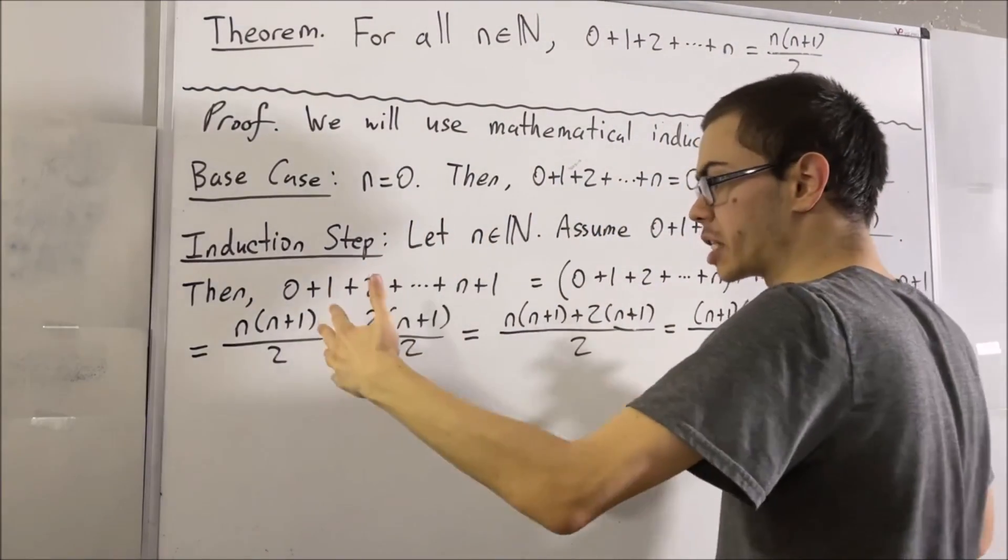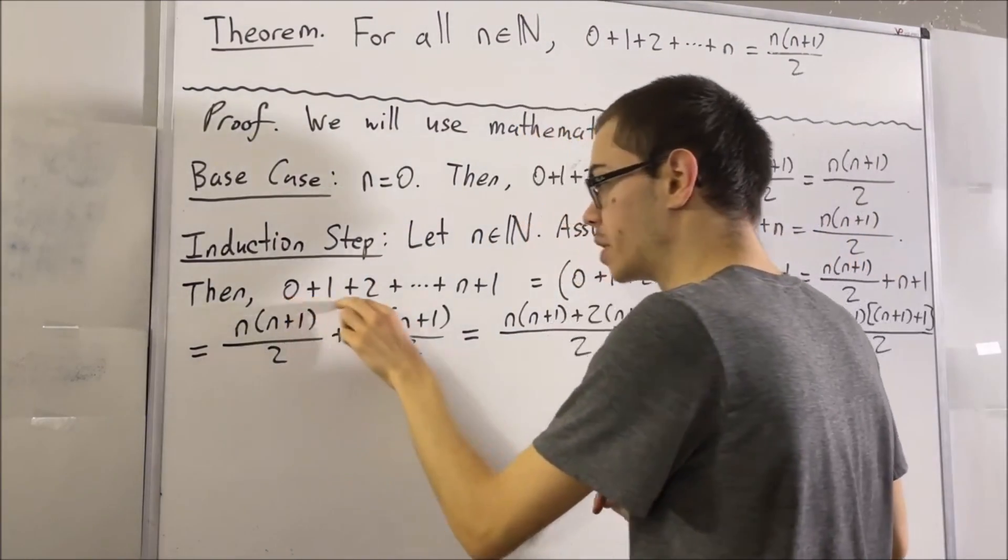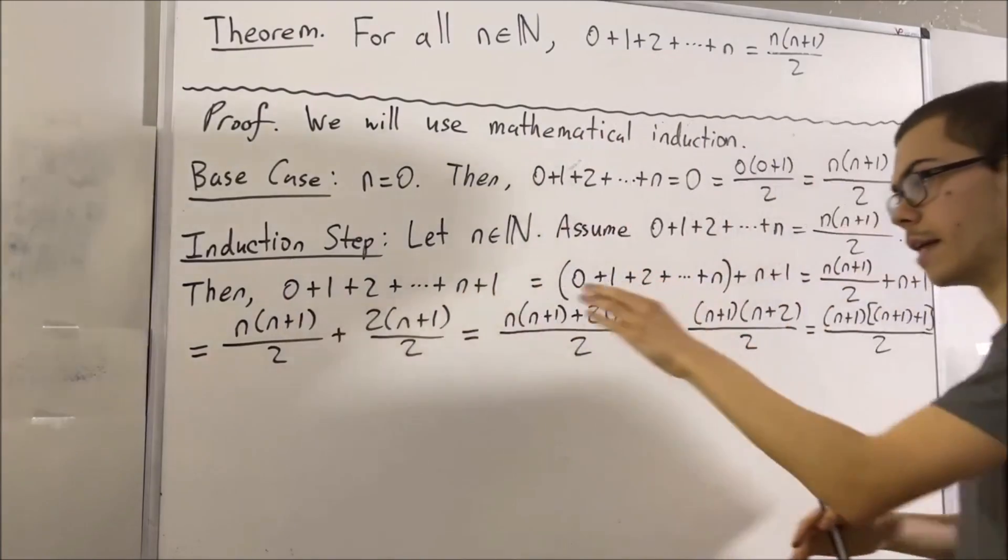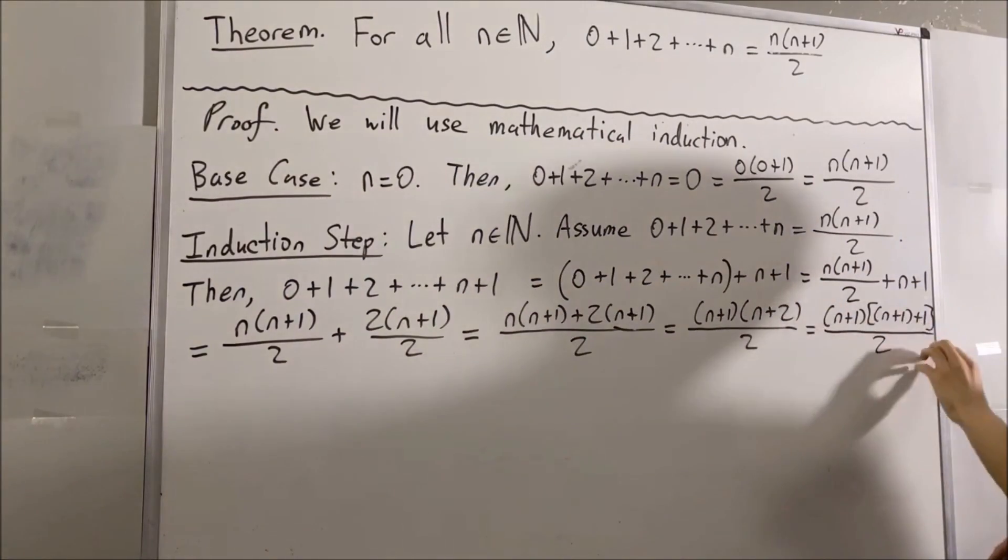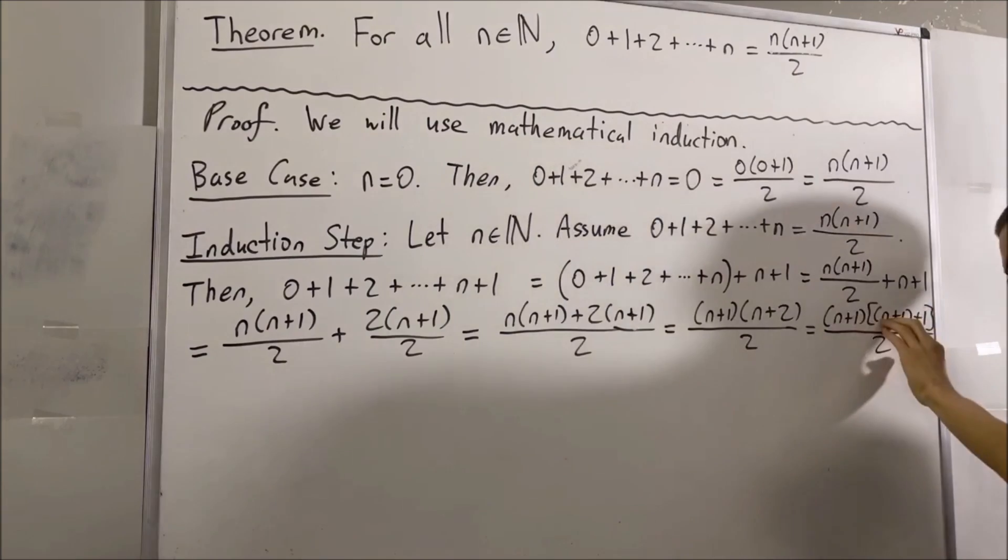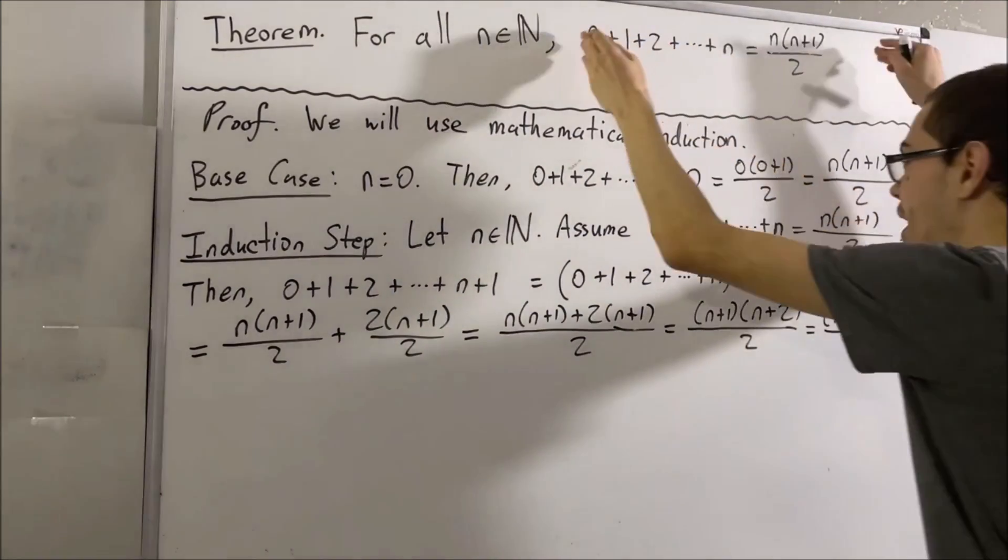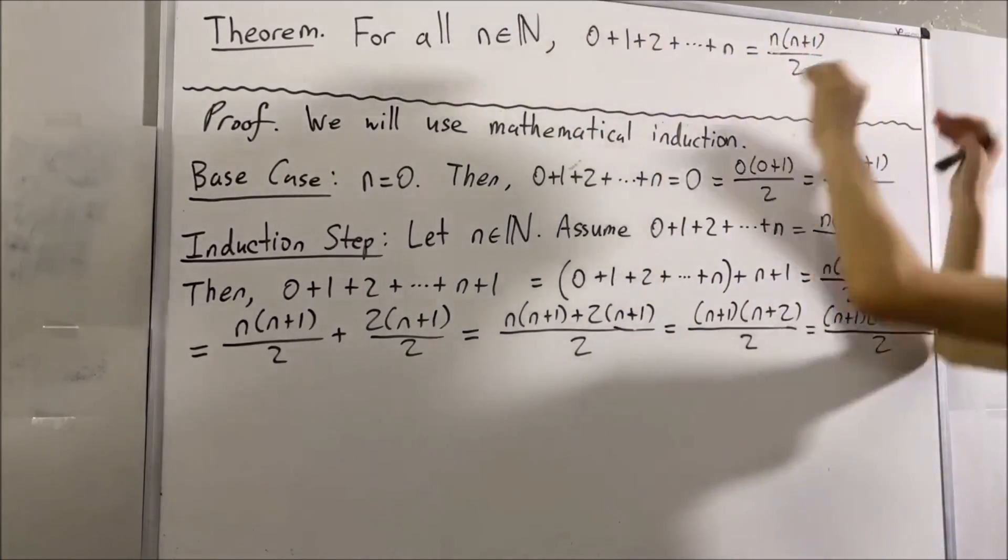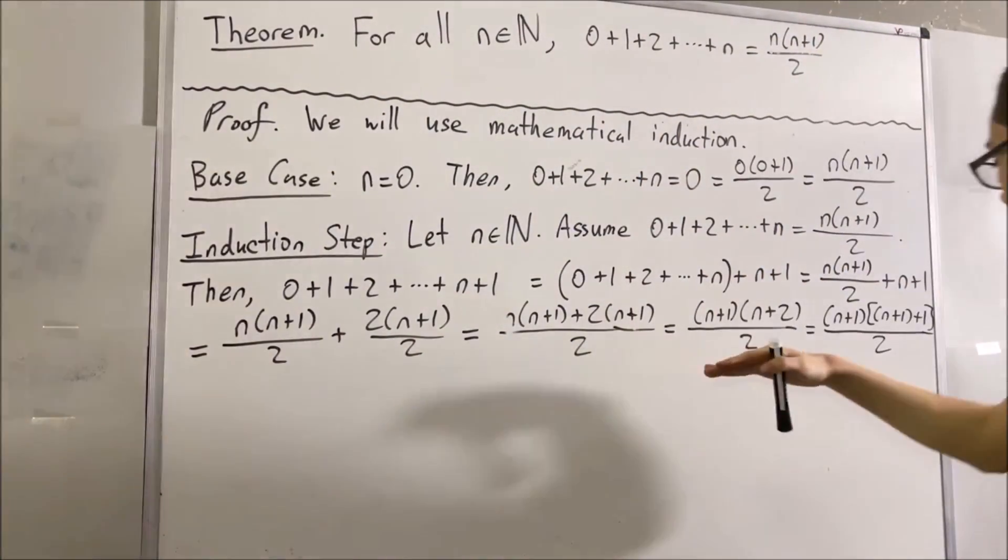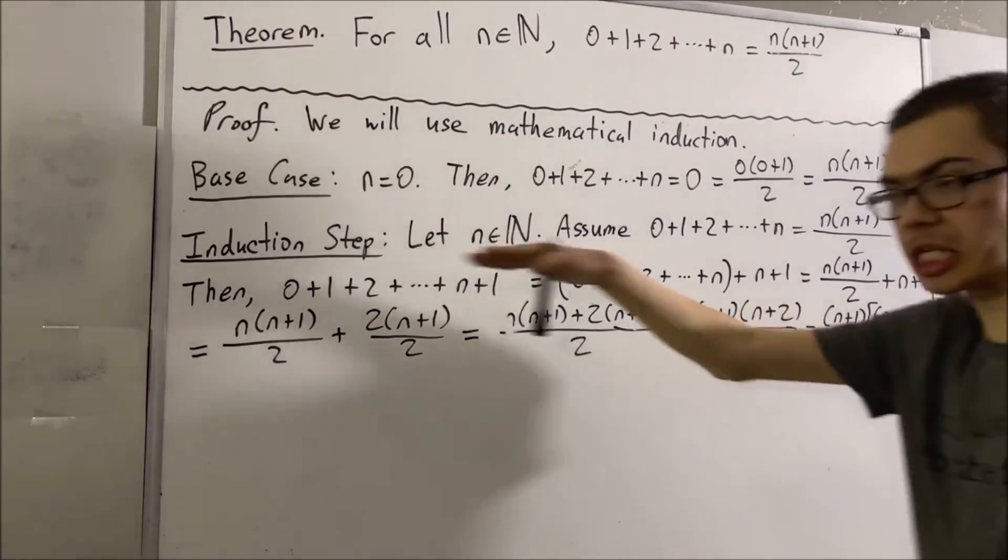And what we have now shown in the induction step is that this is a sum from 0 to n plus 1. It's equal to this thing, which is really just n plus 1, n plus 1, 1, and 2. So it's exactly what we have here, but instead, n is replaced with n plus 1. And so this proves the induction step.